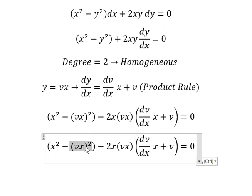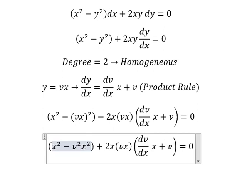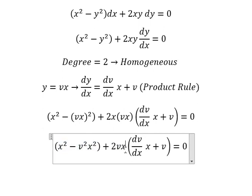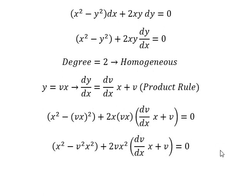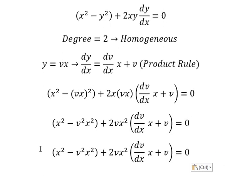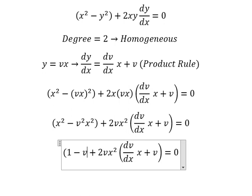So this one we have v squared x squared, and this one we have vx squared. Next we simplify x squared from both sides and we have the expression like this.